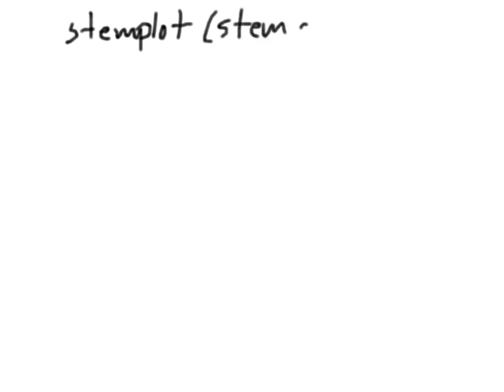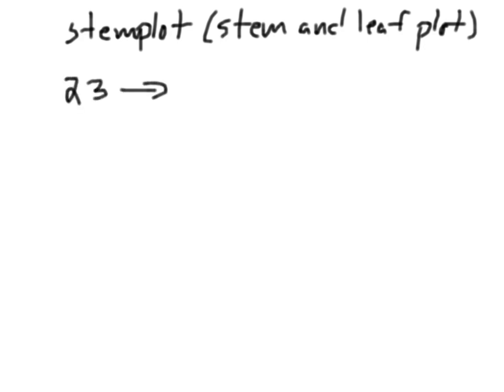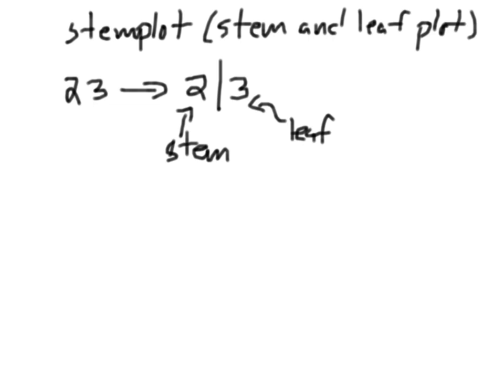The next kind of graph we're going to make is something called a stem plot, sometimes also called a stem-and-leaf plot. The big idea is you take a number — like one plant had 23 tomatoes — and you break that into a stem and a leaf: 2 is the stem and 3 is the leaf. Our data goes from basically 15 to 33, so the stems are just 1, 2, and 3. I'll draw a vertical bar and list 1, 2, and 3 as the possible stems.